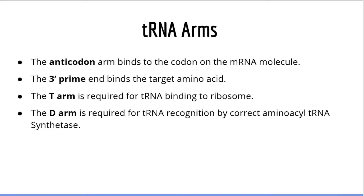The 3' arm is formed by the 3' end of the tRNA molecule. This arm is important because it binds the target amino acid via a three-nucleotide sequence called CCA. Every type of tRNA binds its respective amino acid via the same three-nucleotide sequence, CCA. The 3' end does not determine the specificity of the amino acid that the tRNA binds — instead, this is performed by a special enzyme called aminoacyl tRNA synthetase.